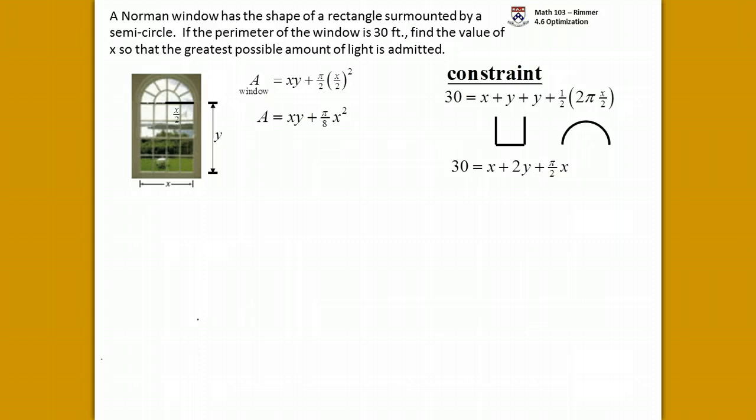Put the two y's together, we have 2y plus x plus pi over 2 x should equal 30. We can solve for one of the variables in terms of the other. If we solve for y, we'll have 30 minus x minus pi over 2 x equals 2y, then divide by 2. We get 15 minus half of x minus a fourth of pi x. So that is how y is related to x. Then we can plug that in to replace the y in our area formula.